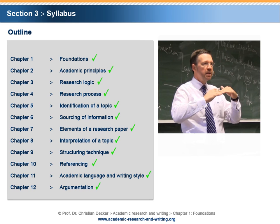As presented in the previous section, this course has been divided into 12 chapters, which introduce you to academic research and writing. However, there are more aspects and issues in academic research and writing that might be important in some cases but will not be covered by this course.